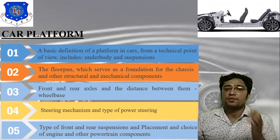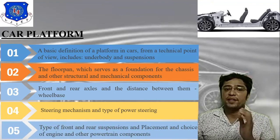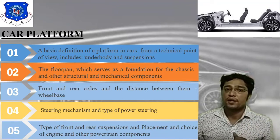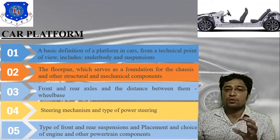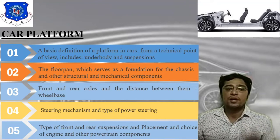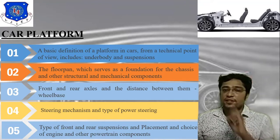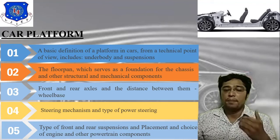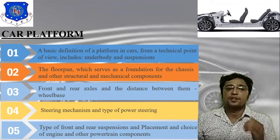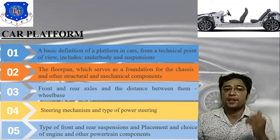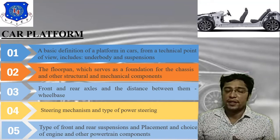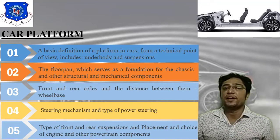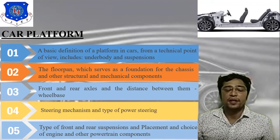The fourth component is the steering mechanism, including the type of power steering. The fifth component covers types of front and rear suspension, and the placement and choice of engine and other powertrain components. As you can see in the image, the car platform is the integration of all these parameters: chassis, frame, four wheels, steering system, seating arrangement, suspension, and powertrain.